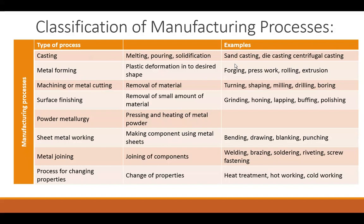The next type of process is the Machining or Metal Cutting Process wherein raw material is converted into the required finished shape and size with the removal of extra material from the raw material part. Turning, shaping, milling, drilling, and boring are the operations performed to remove material from the raw material and convert it into the required finished product.